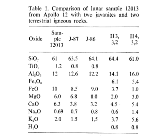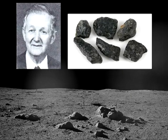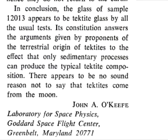Other than having about twice as much calcium oxide, KREEP sample 12013 is almost identical in composition to tektites. These and other similarities led O'Keefe to conclude that tektites found on Earth are of lunar origin: 'The glass of sample 12013 appears to be tektite glass by all the usual tests. Its constitution answers the arguments given by proponents of the terrestrial origin of tektites. There appears to be no sound reason not to say that tektites come from the moon.'